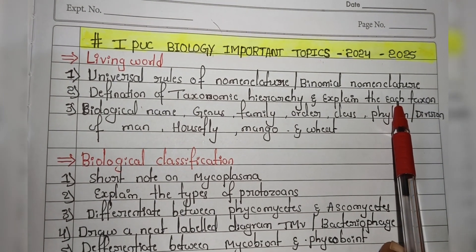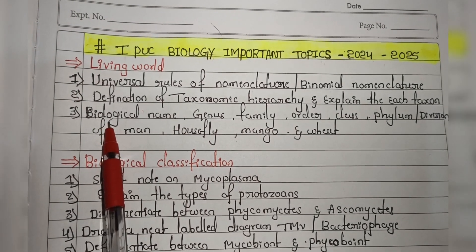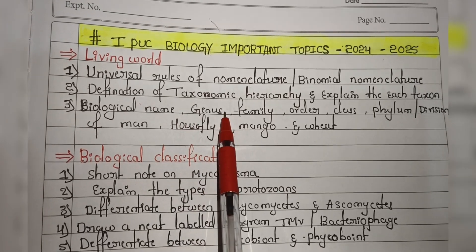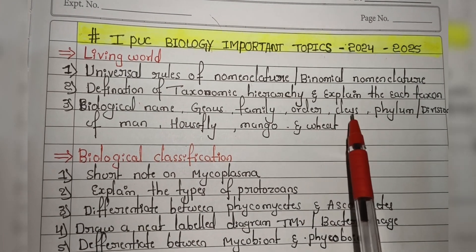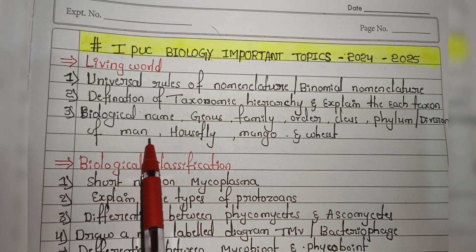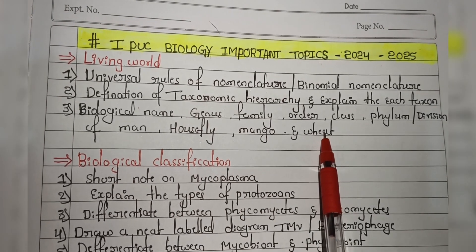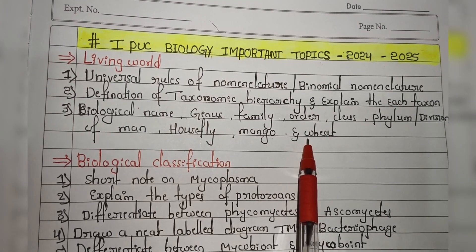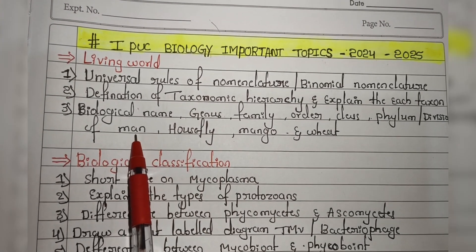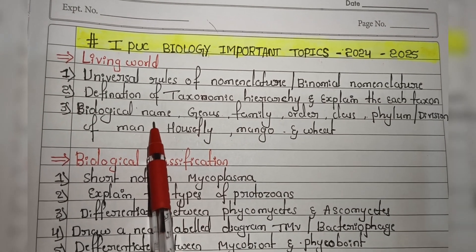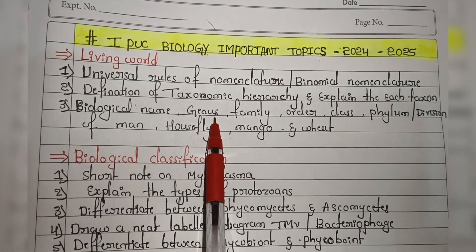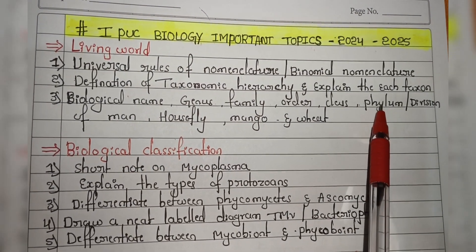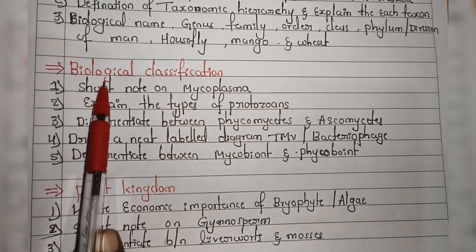You have to explain from kingdom to genus. The third topic is the scientific name or biological name, genus name, family, order, class, phylum or division of the human, housefly, mango, or wheat. From mango, housefly, and wheat, they will ask any one. For example, for mango, you have to write the scientific name, biological name, genus name, family, order, class, and phylum. Second chapter is Biological Classification.